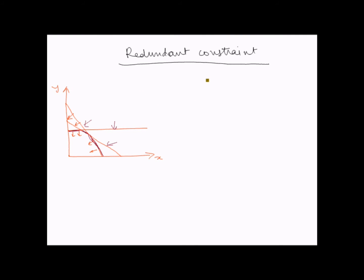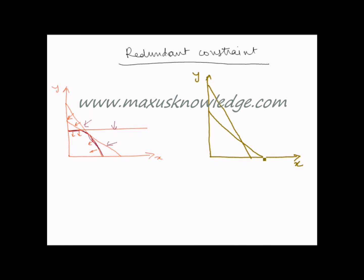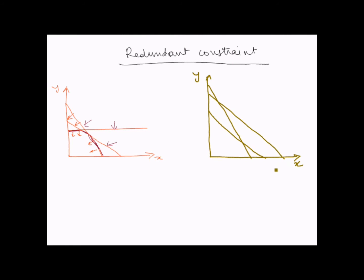Now let's take another example. This is another graph. The first constraint is like this, the second goes like this, and the third is this. All three are pointing downwards for their feasible solutions, so the feasible solution region becomes this one and then this.